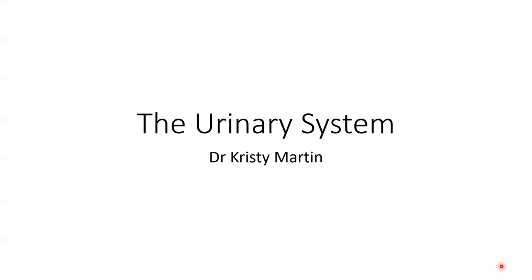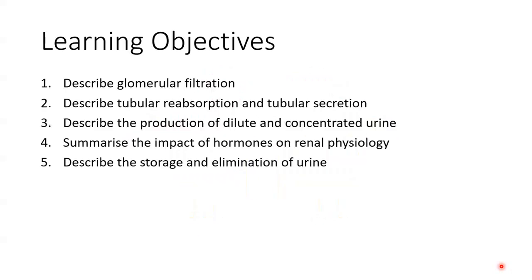Continuing on with the urinary system, in this lecture we will cover renal physiology. We will describe the three basic processes undertaken by nephrons and collecting ducts to produce urine, discuss how this process differs depending on whether we need to produce dilute or concentrated urine, the impact of hormones on these processes as well as the renin-angiotensin-aldosterone system, and lastly the composition, storage and elimination of urine.